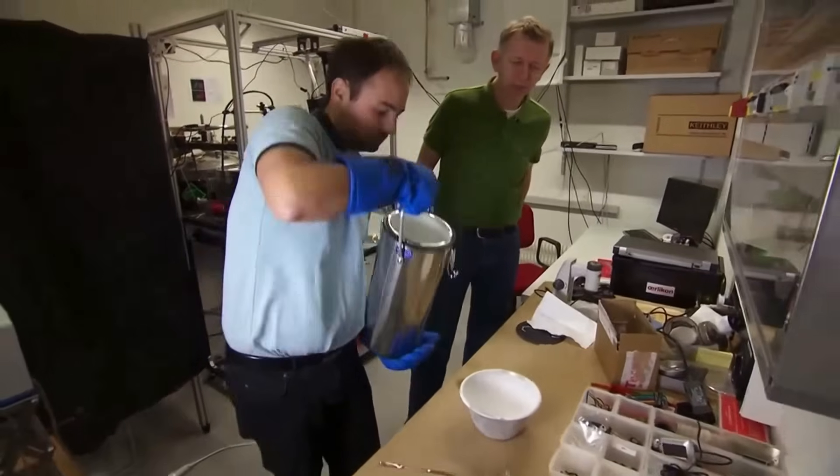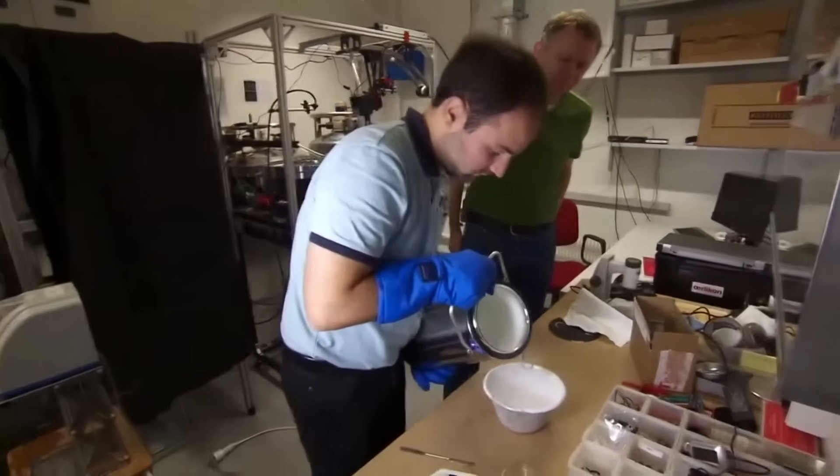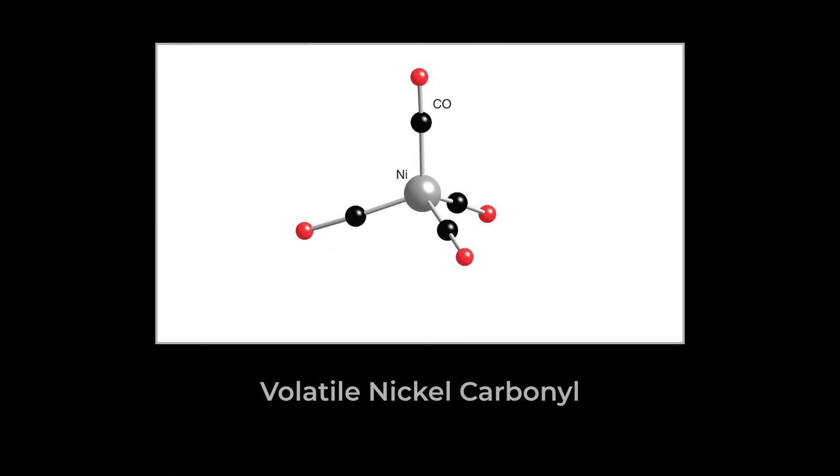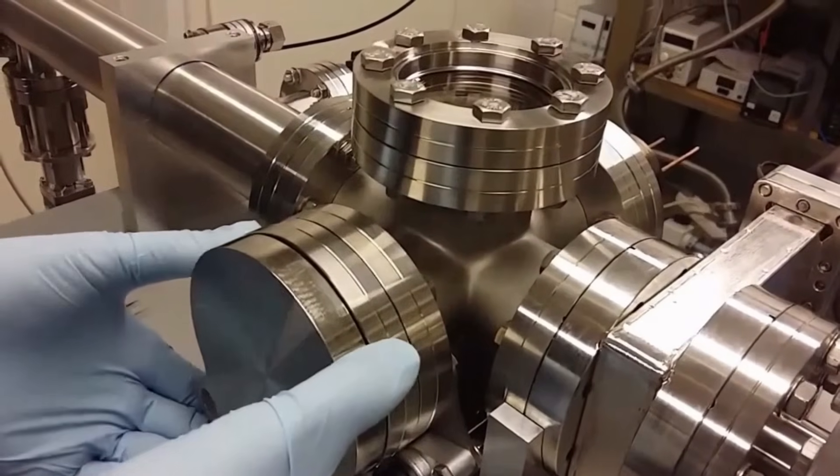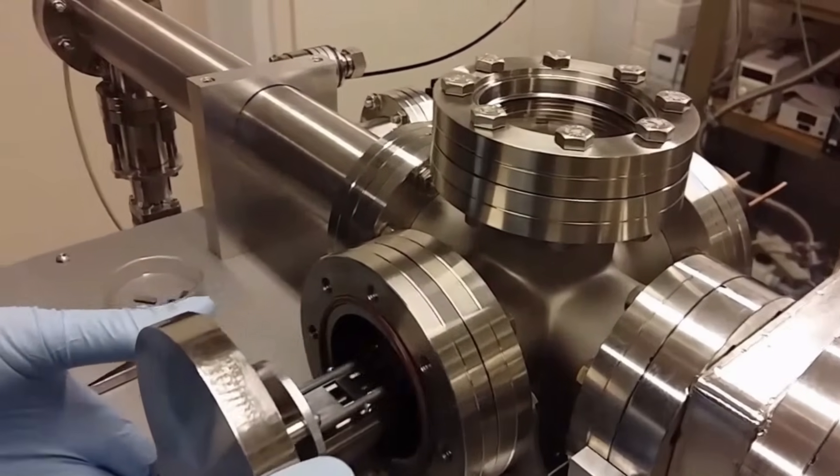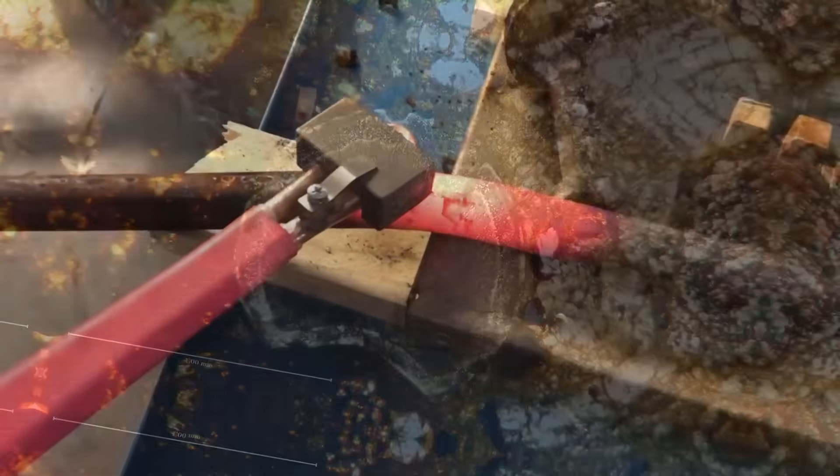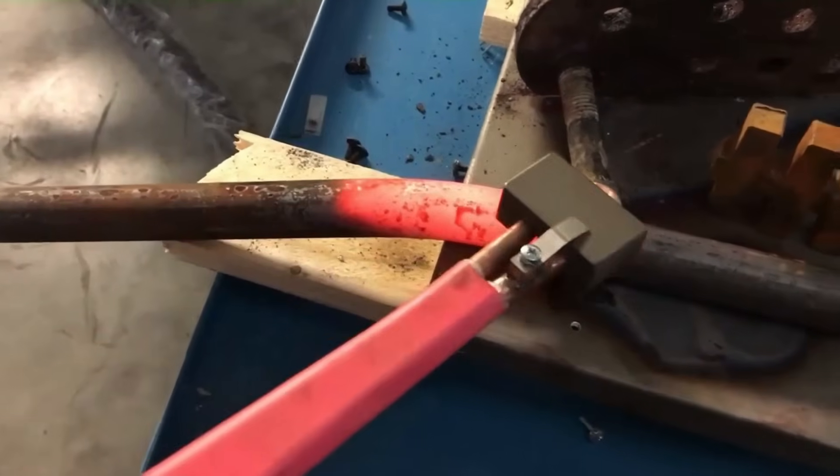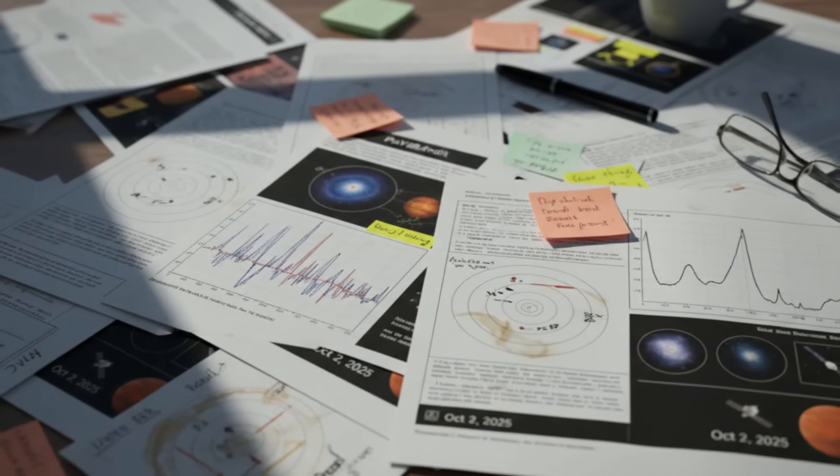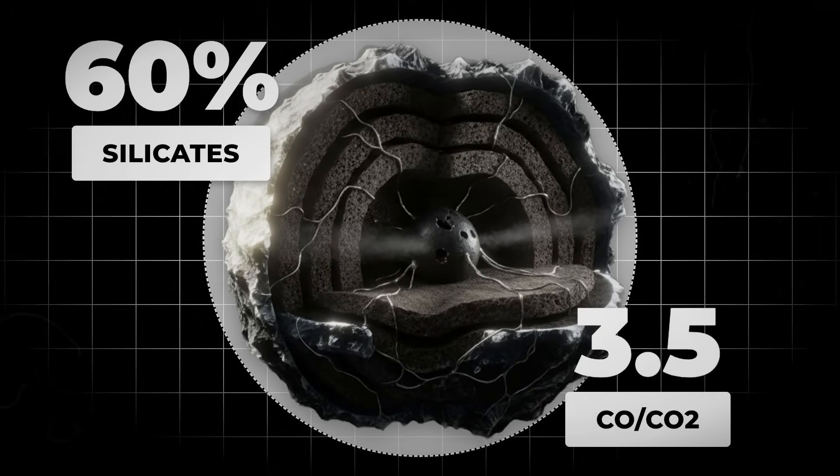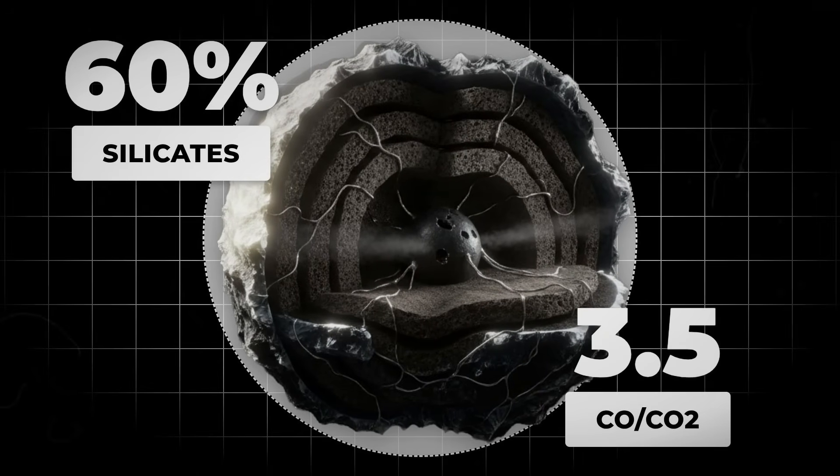Laboratory models suggest that at the distances where these observations were made, only certain nickel compounds, like volatile carbonyls or organometallic complexes, could release nickel atoms so efficiently at such low temperatures. Traditional mineral grains, the kind that make up most comet nuclei, simply don't let go of their metals this easily. The data pointed to a mechanism that doesn't fit the standard playbook, raising questions about the parent material and the processes at work inside 3i-Atlas.